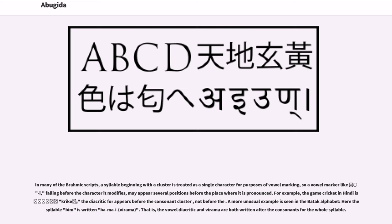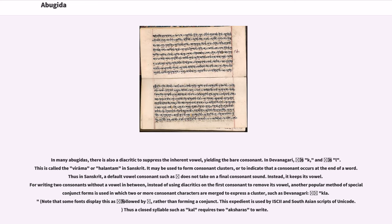A vowel marker like 'i', falling before the character it modifies, may appear several positions before the place where it is pronounced. For example, the word 'cricket' in Hindi has the diacritic appearing before the consonant cluster, not before the individual consonant. A more unusual example is seen in the Batak alphabet, where the syllable BIM is written with the vowel diacritic and virama both written after the consonants for the whole syllable. In many abugidas, there is also a diacritic to suppress the inherent vowel, yielding the bare consonant, called the virama or halanta in Sanskrit.